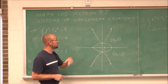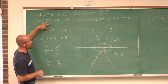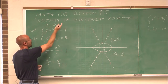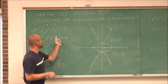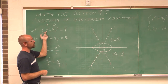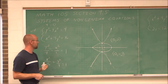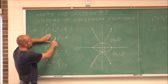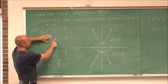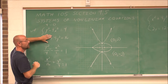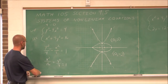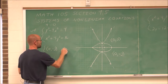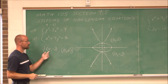I should always check my work. Testing the point (0, 2): 2 squared is 4, and 0 squared times negative 4 is 0, so 4 minus 0 equals 4 — a true statement. Testing (0, −2): negative 2 squared is 4 minus 0 equals 4 — also true. Checking both points in the second equation: 0 squared plus 4 times 2 squared gives 0 plus 16 equals 16, and 0 plus 4 times negative 2 squared also equals 16. Both solutions work, so I write the solution set as the ordered pairs (0, −2) and (0, 2).